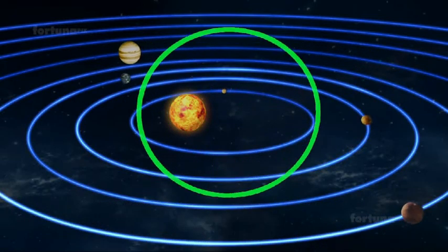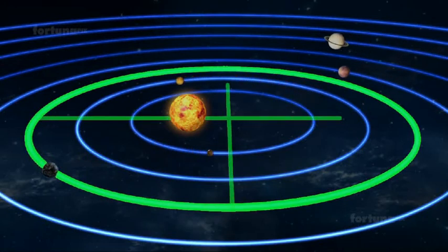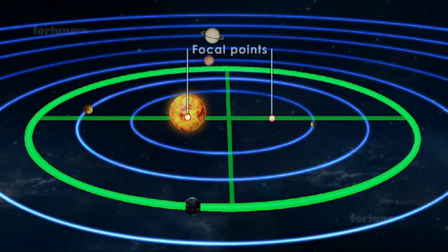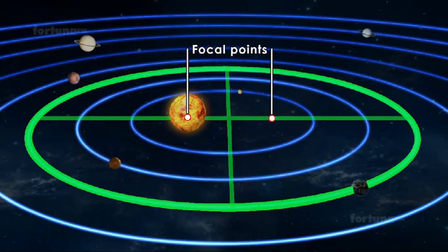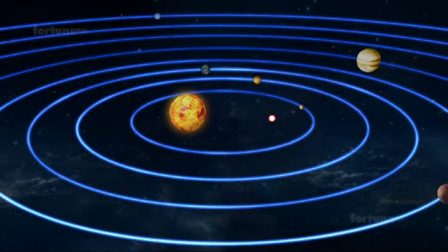An ellipse resembles a stretched out circle. The sun is not at the centre of the ellipse but at one of its two focal points. The other focal point marked with a lighter dot has no physical significance for the orbit.